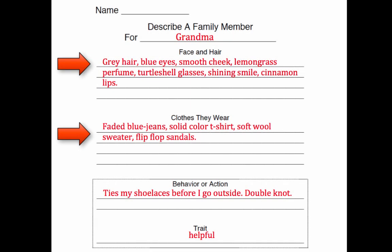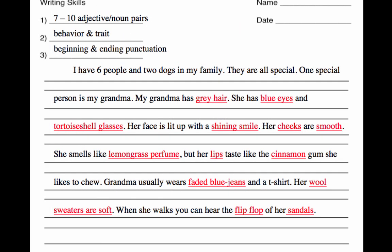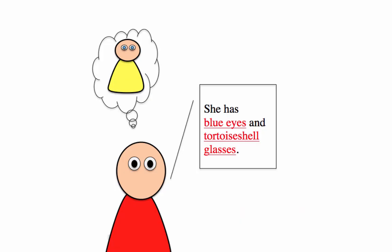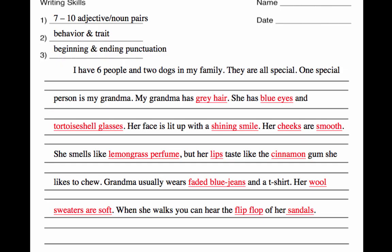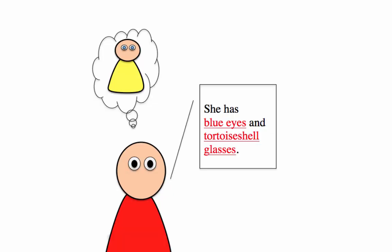Now use the adjective-noun pairs in the face and hair and the clothes they wear section to write four or five sentences describing your special person. Remember to say the sentence in your head before you write it down. Don't list all of the details in one sentence — your reader won't be able to really listen to a long list. Instead, write sentences that use one or two details. Notice when I put two details in one sentence, they're related: 'She has blue eyes and tortoiseshell glasses' — both talk about her eyes.